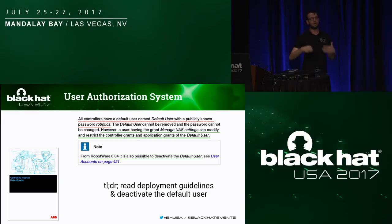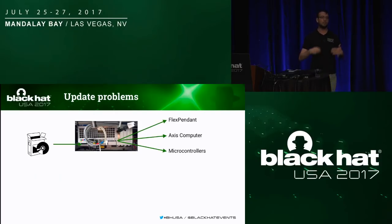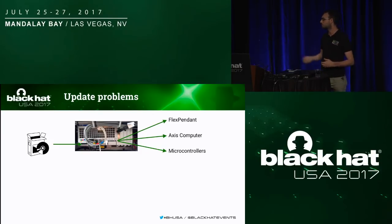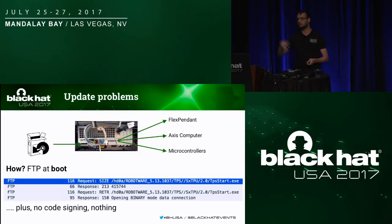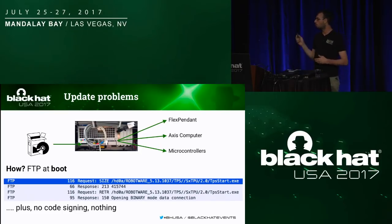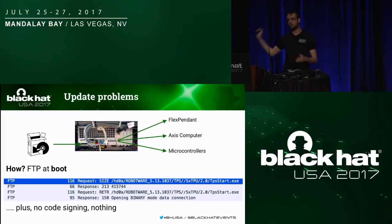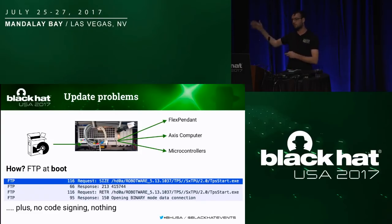Even if we get network access to the robot, we need to bypass this authentication. One subsystem to look at is the update system. The system updates through the main computer, which propagates updates to all components. When the FlexPendant boots, it fetches the software it needs from the main computer using FTP. There is no code signing — so if you can change the code stored on the main computer, you can change the firmware running on the FlexPendant.